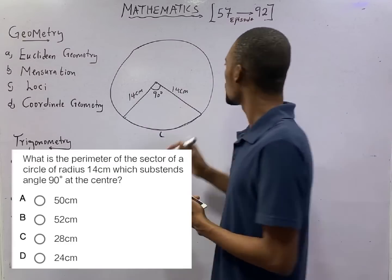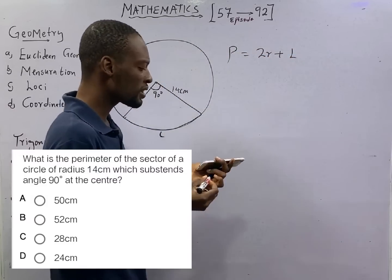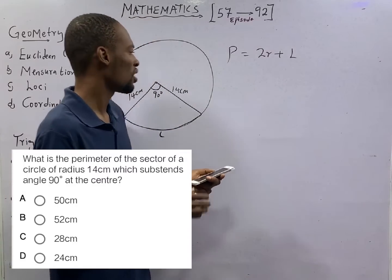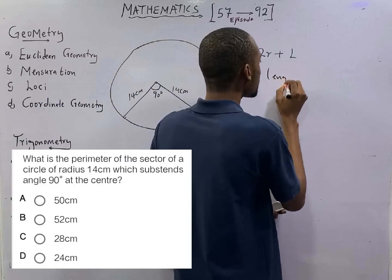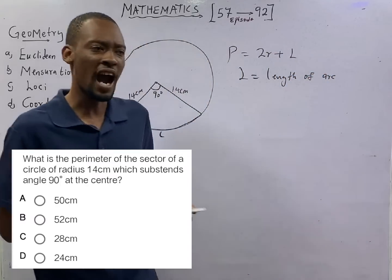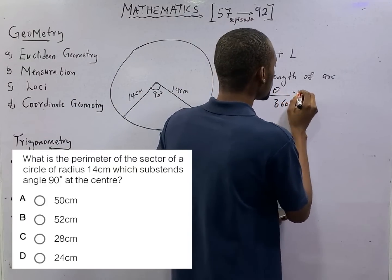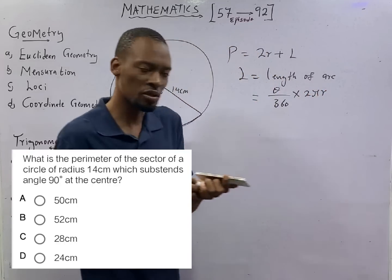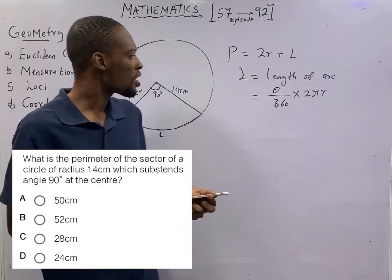Perimeter of a sector is 2R plus L. What is R? R is the radius. And what is L? L equals length of arc. And length of arc is theta over 360 times 2 pi R.